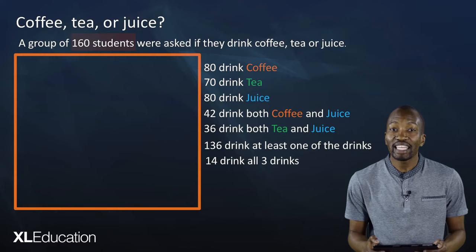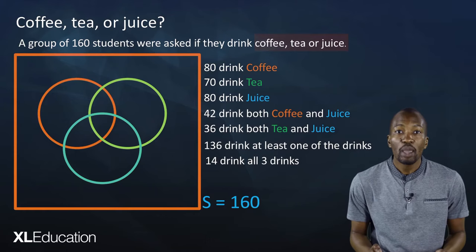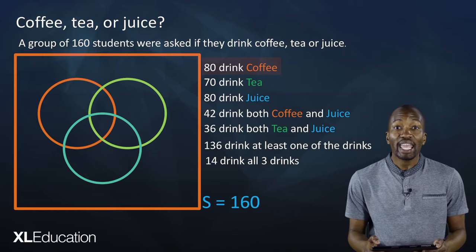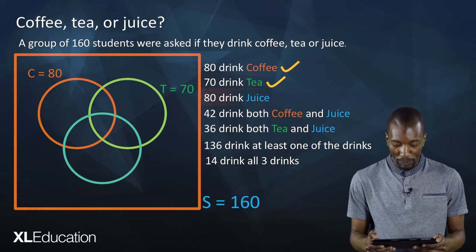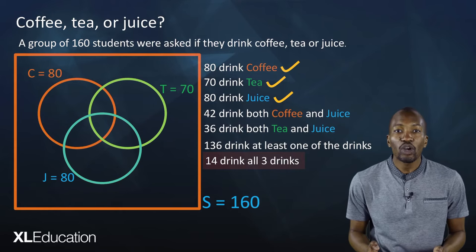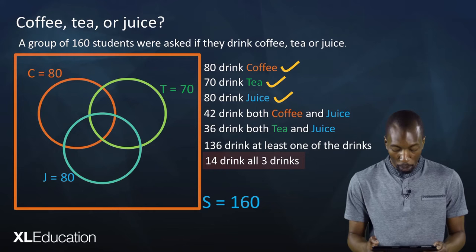Now we must put all this information on a Venn diagram, but where do we start? Remember, 160 students were asked about these three drinks, so our sample size is 160. We have coffee, tea, or juice, meaning we have three events in our sample space. 80 drink coffee, 70 drink tea, 80 drink juice. 14 drink all three drinks — this is the intersection of all three circles, so where all three circles meet we'll put 14.